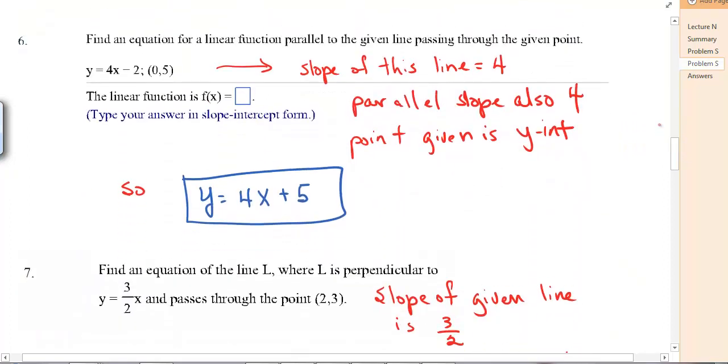Find an equation for a linear function parallel to the given line and passing through the given point. So you look at the line that you are given. And the slope of this line is 4. So if we're writing one parallel to that, our slope is also 4. The point that you're given, this 0, 5, we need to recognize if you have a 0 for an x value, you have the y-intercept. So the point given is the y-intercept, which would be 5. So we have y equals 4x plus 5.